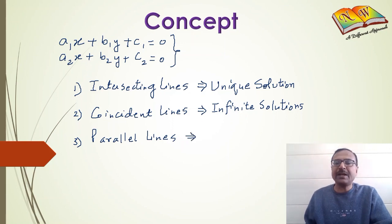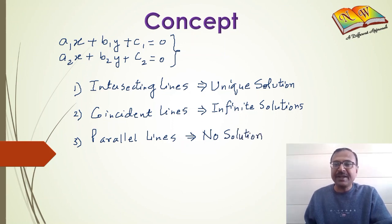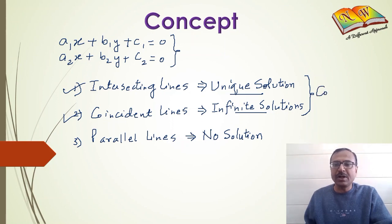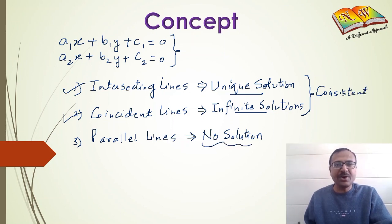But in case of parallel lines, there is no point of intersection and there is no solution. Whenever the graph shows intersecting lines or coincident lines, then there are some solutions — whether it is one or many — and in that case, you call the pair of linear equations consistent. Whenever there is no point of intersection or no solution, then the system of equations is said to be inconsistent.